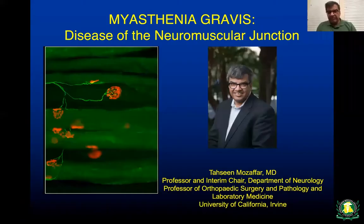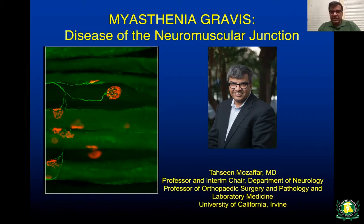As-salamu alaykum. My name is Tahseen Mozaffar. I'm currently the professor and interim chair of the Department of Neurology at University of California, Irvine. My talk today is going to be on myasthenia gravis, which is a disorder of the neuromuscular junction, mostly seen by neurologists, but also can be seen by patients that present to ophthalmology as well as medicine services.